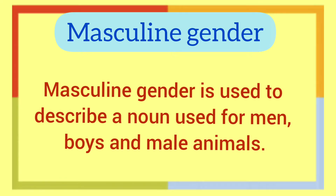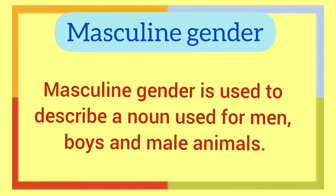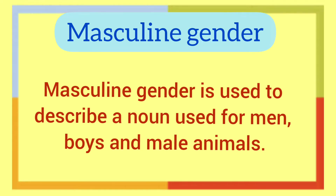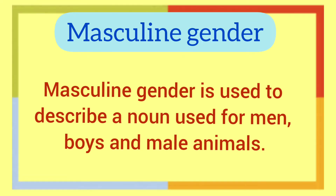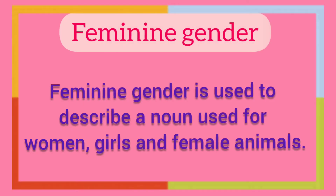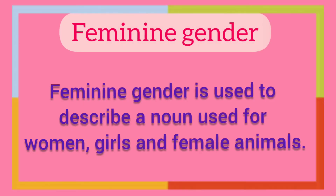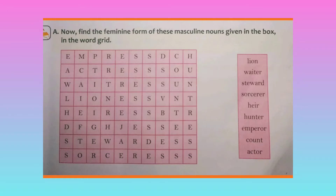Let's see first the definitions. Masculine gender is used to describe a noun used for men, boys and male animals, whereas feminine gender is used to describe a noun used for women, girls and female animals.